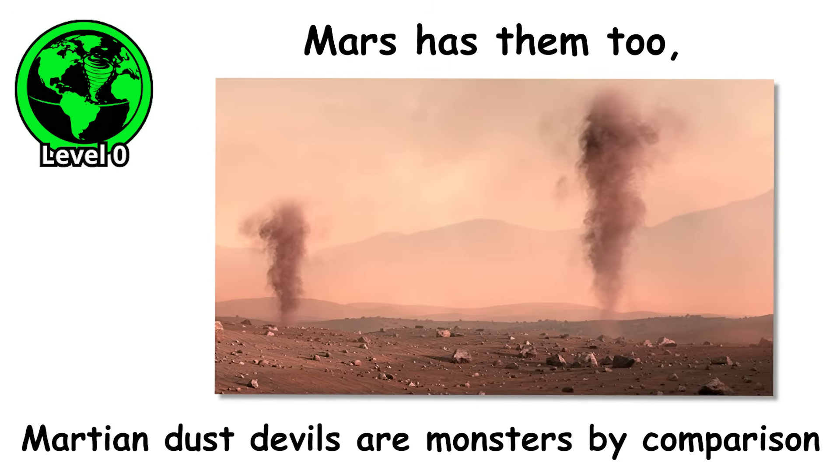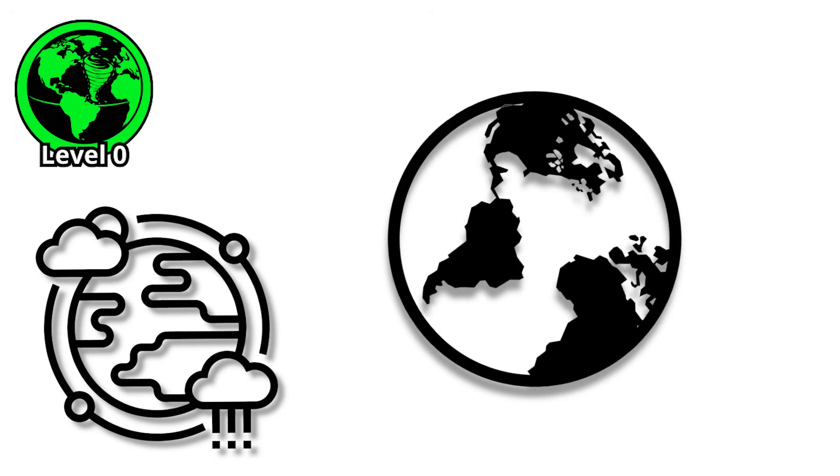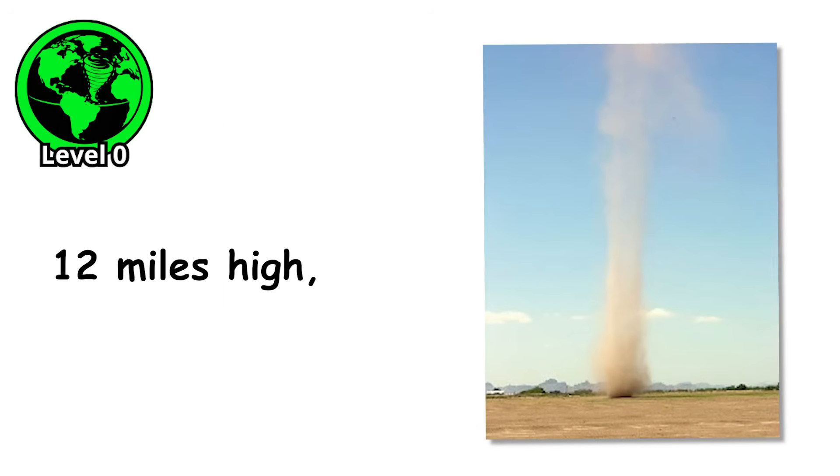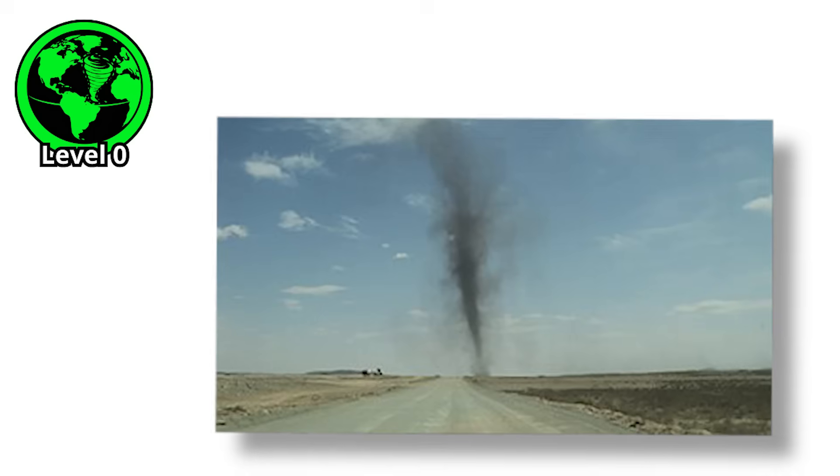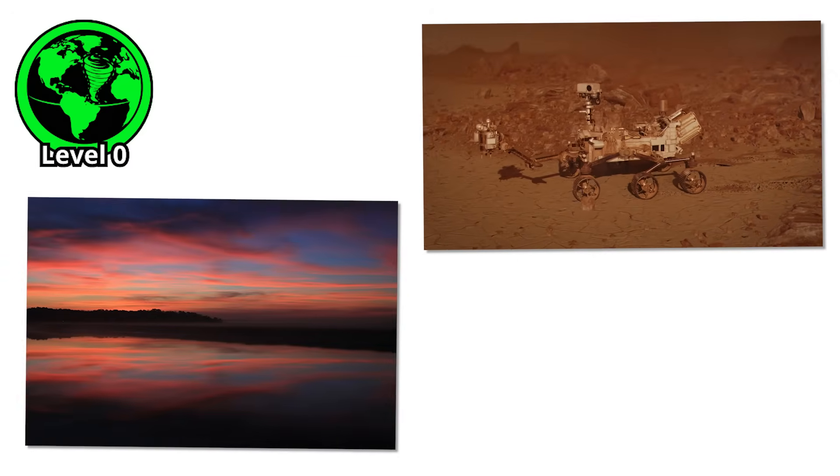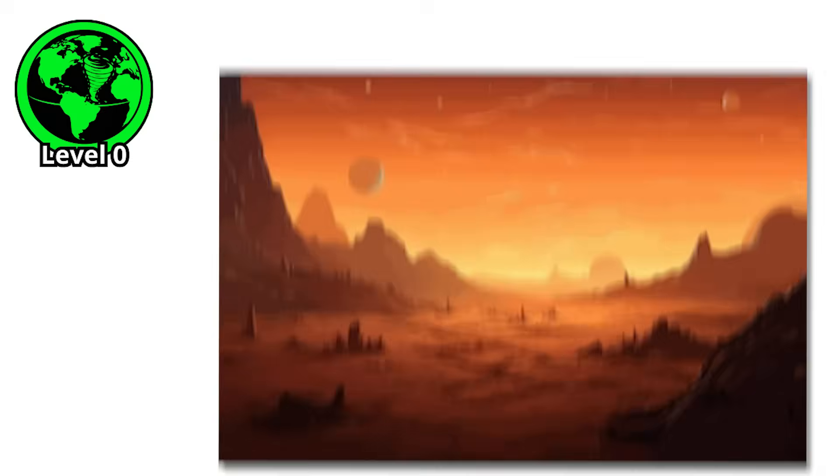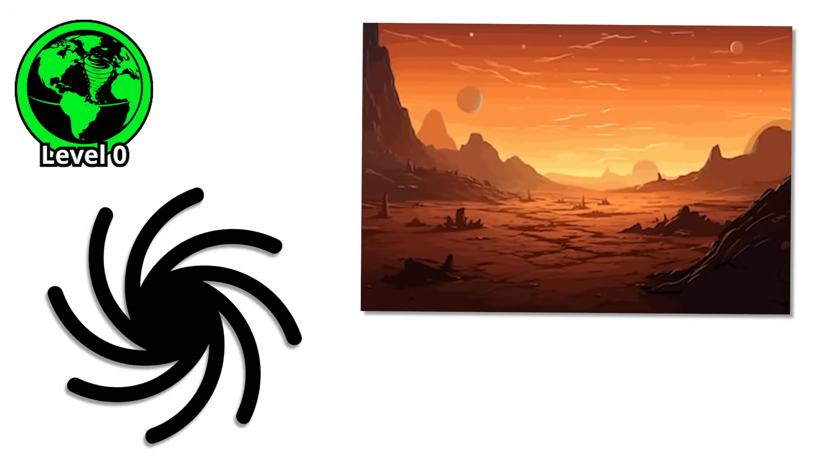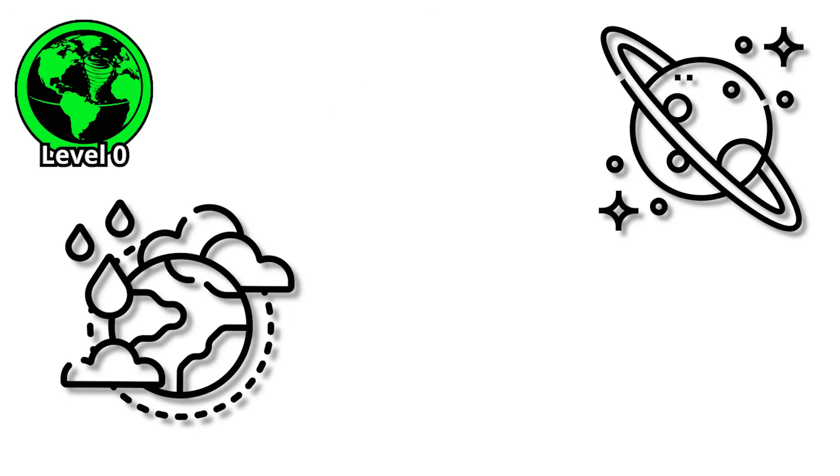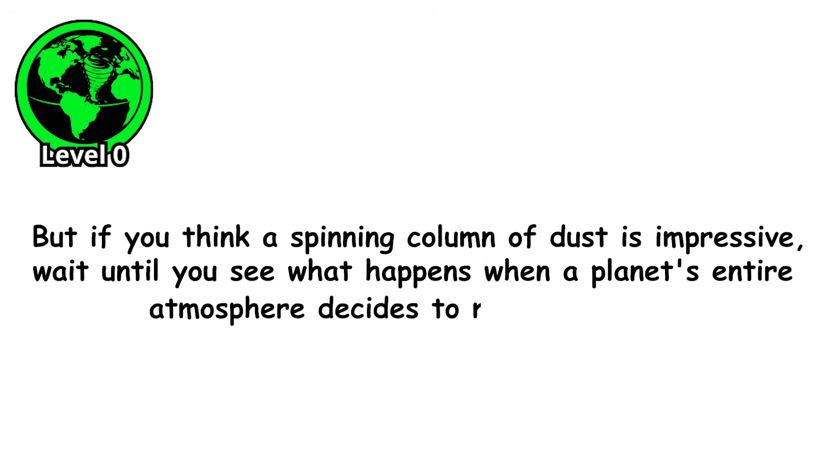Dust devils aren't just an Earth thing. Mars has them too, except Martian dust devils are monsters by comparison. Without the thick atmosphere that limits their growth on Earth, Martian dust devils can tower 12 miles high, 50 times taller than Earth's versions, and some stretch half a mile wide. The Martian rovers have photographed thousands of them, dark columns reaching toward the salmon-colored sky, scouring the rust-red surface clean. They're beautiful in a desolate way, elegant spirals of dust against an alien landscape. They're also a reminder that every planet with an atmosphere has weather, and weather means storms. But if you think a spinning column of dust is impressive, wait until you see what happens when a planet's entire atmosphere decides to move at once.